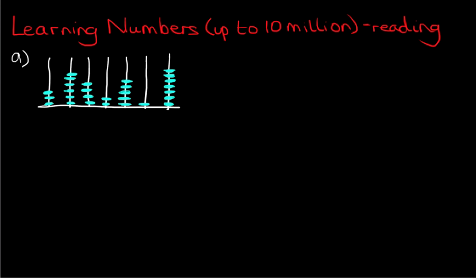What number does the abacus show? Well, the first thing we should do is to label the columns. Now we've done this before, but we haven't done all of these columns. Let's start with the column on the right. The column on the right is U — that's U for units. The one on its left is T for tens. Then it's H for hundreds. Then TH for thousands. Then TTH, the ten thousands. Then the hundred thousands. And lastly, M for millions.